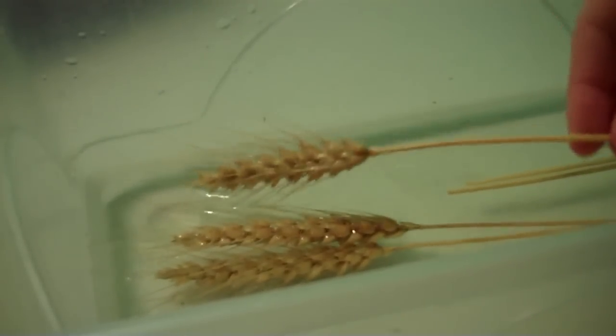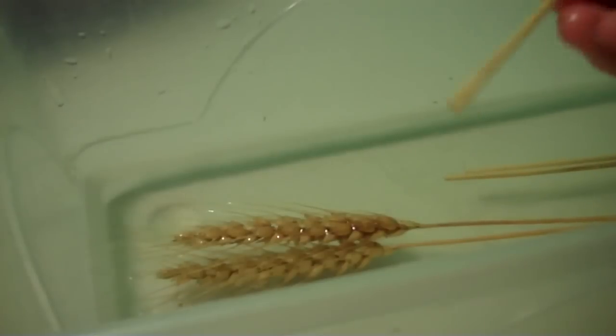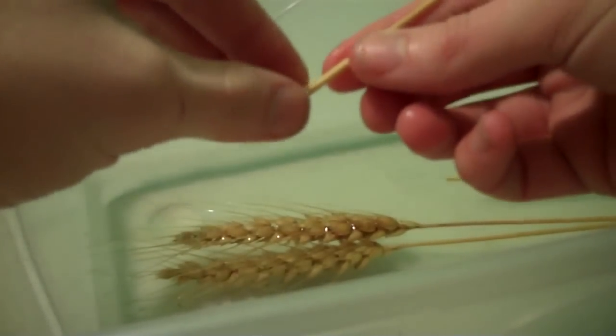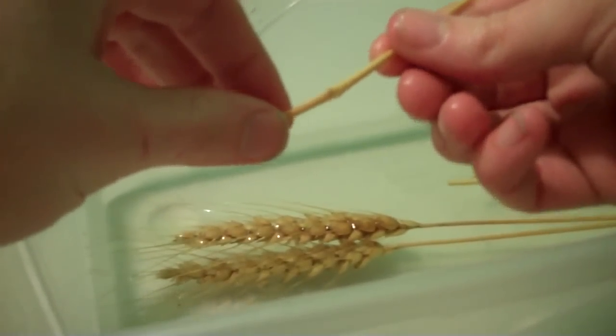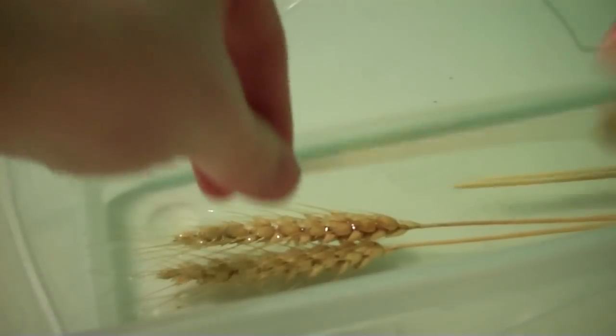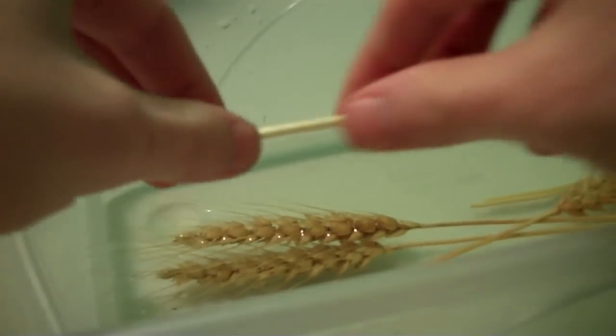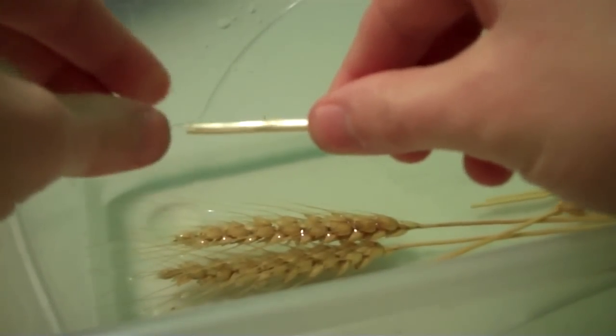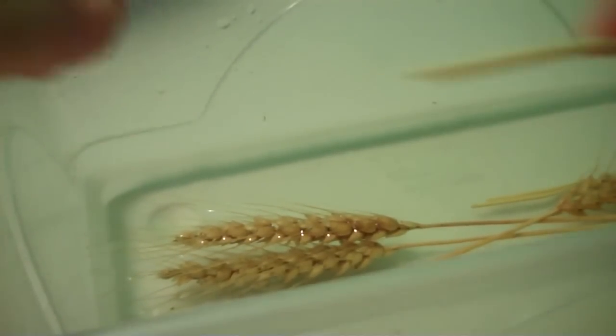Now once your straws have been soaking for a while, you want to test them and make sure that they're ready. The easiest way to do that is to just take the end of it and give it a little bend. Now if it bends nicely, then you know the straws are ready. If, on the other hand, it snaps like that, then you know that they're not ready and they need to soak a little bit longer.